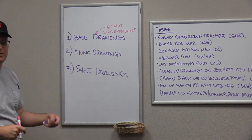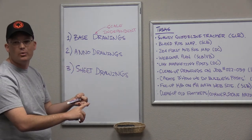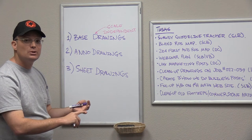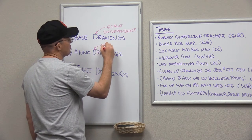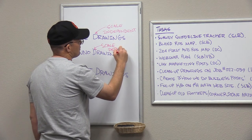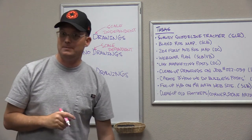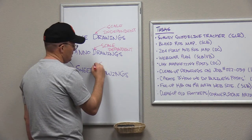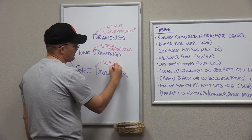The annotation drawing has all your text, line labels, curve labels, and multi-leaders. It also has your hatching and your symbols — things that are scale dependent. An annotation drawing is scale dependent, which means if you're working on a project where you have more than one scale, you're going to have more than one annotation drawing.